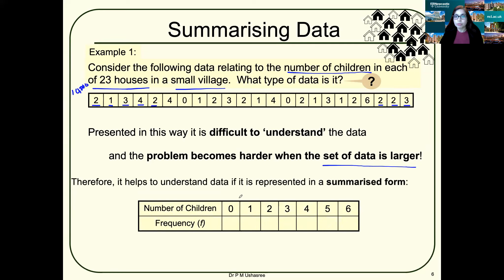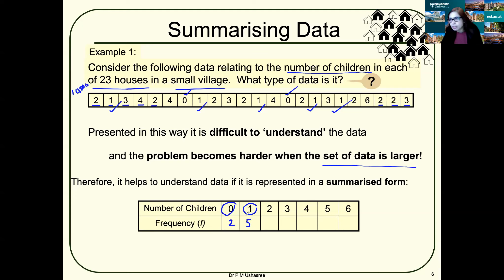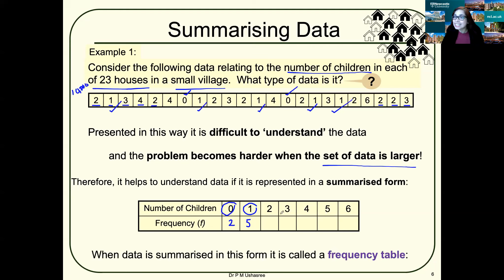So we can summarize it. To understand the data, we can summarize it into a table. Such a table that summarizes data into a simpler form is called a frequency table. For example, you can count how many houses have zero children — that's two houses. How many have one child? Count: one, two, three, four, five — five houses with one child. You're tracking how frequently each value occurs.